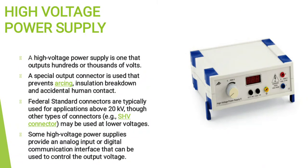A high voltage power supply is one that outputs hundreds or thousands of volts. A special output connector is used that prevents arcing, insulation breakdown, and accidental human contact. Federal standard connectors are typically used for applications above 20 kV, though other types of connectors are also used.